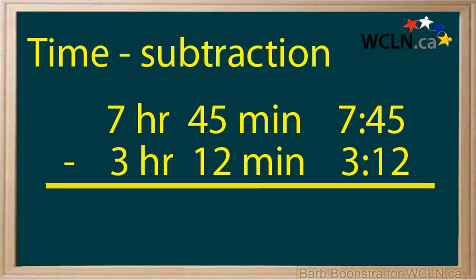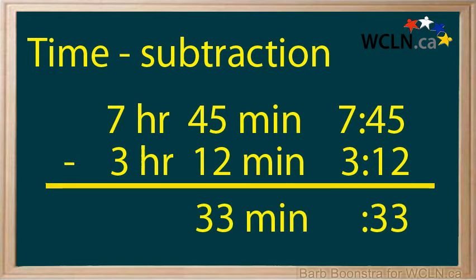To subtract time, you treat each unit separately. First, you are going to subtract the minutes. 45 minus 12 is 33 minutes.